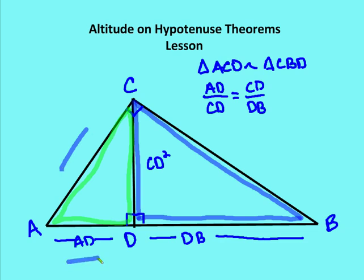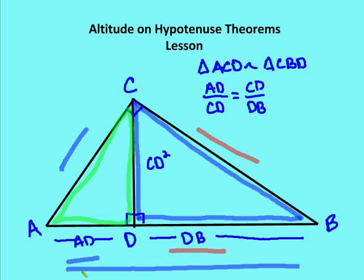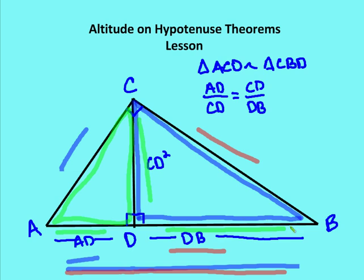So when we talk about AC squared, it's going to be AD times AB. When we talk about CD squared, CD squared is equal to AD times DB. There's a pattern: CB squared equals DB times the entire hypotenuse; AC squared equals AD times the entire hypotenuse; and CD squared equals the product of AD times DB.